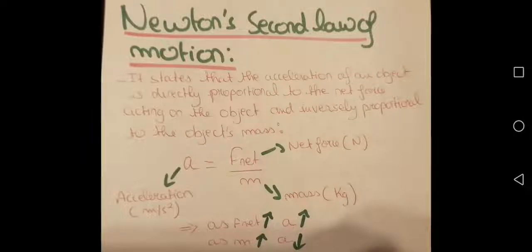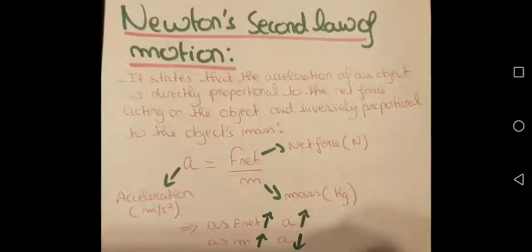Newton's second law of motion states that the acceleration of an object is directly proportional to the net force acting on the object and inversely proportional to the object's mass. So acceleration is equal to net force over mass. Acceleration is measured in meters per second squared, force is measured in newtons, and mass is measured in kilograms. As the net force increases, the acceleration increases as well because they are directly proportional. As mass increases, the acceleration decreases because they are inversely proportional. Newton shows a more specific relationship between force and motion with this law.